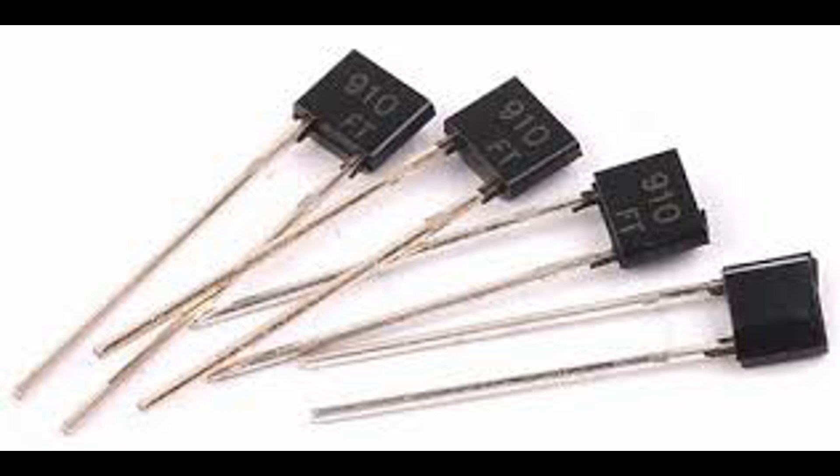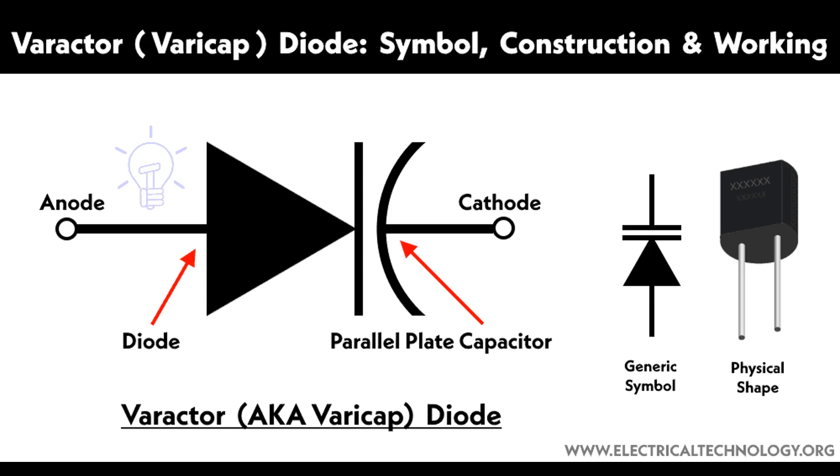Frequency multipliers: Varactor diodes generate higher harmonics of an input signal, effectively multiplying the frequency. They are used in RF transmitters and receivers to generate higher frequency signals from a lower frequency source.